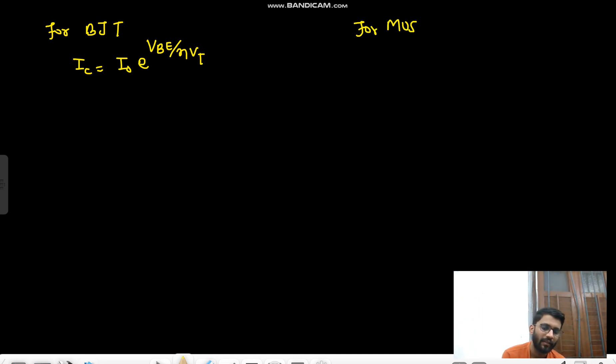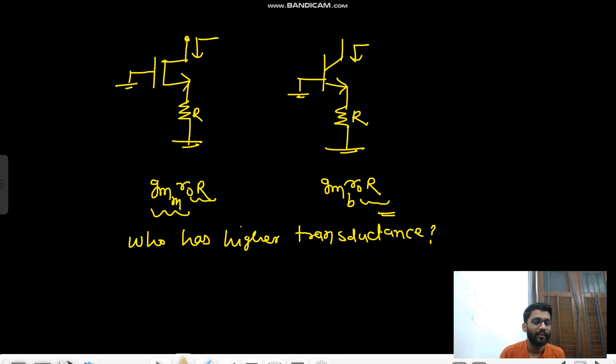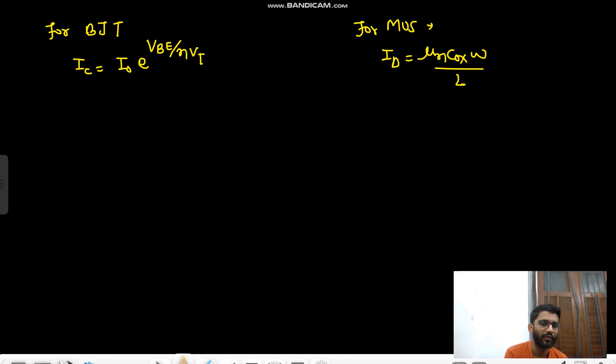And for MOSFET, what is IC—oh sorry, ID, drain current—that is mu_n·Cox in saturation region, of course, because we are in saturation region. In which region do we operate the MOSFET when we are using it for amplifier? When we are using MOSFET for amplifier, we operate it in saturation region.